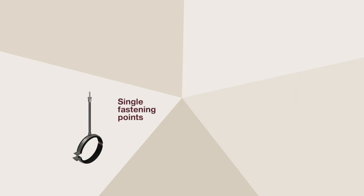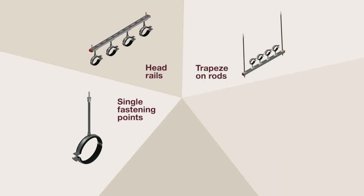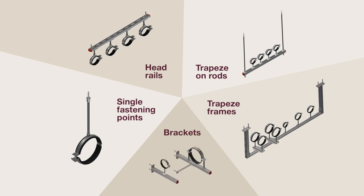So, these are the five basic configurations to remember for small commercial buildings. Single fastening points, head rails, trapeze on rods, trapeze frames, and brackets.